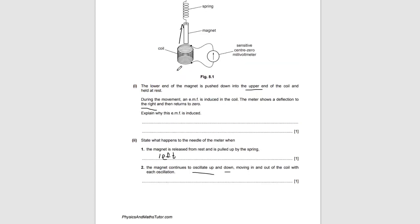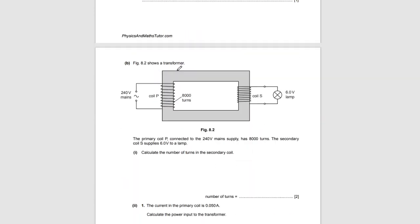Figure 8.2 shows a transformer. You can usually identify a transformer by the primary coil and the secondary coil — if you see two coils on different sides, you know it's going to be a transformer. The primary coil P is connected to a 240 volt mains supply and has 8,000 turns, and the secondary coil S supplies 6 volts to a lamp.